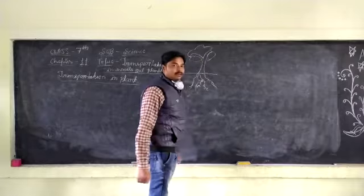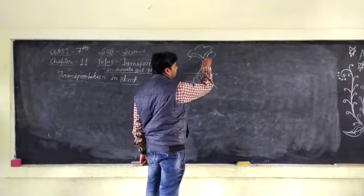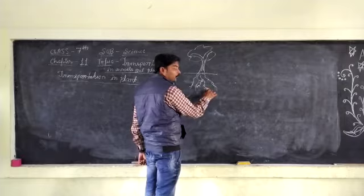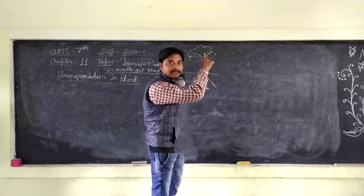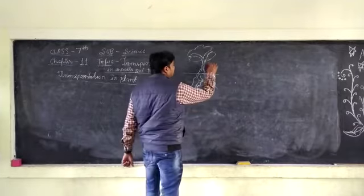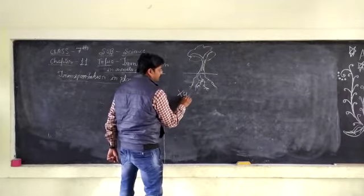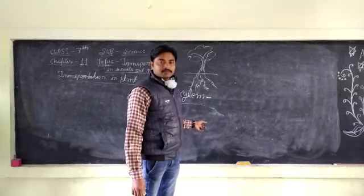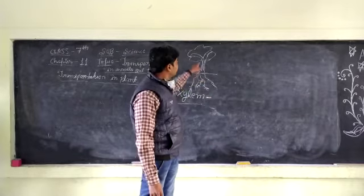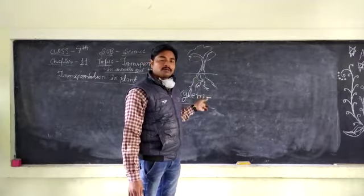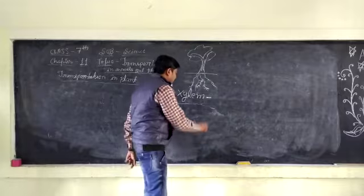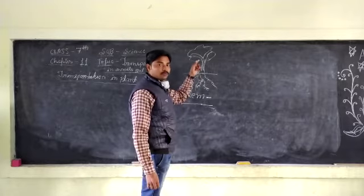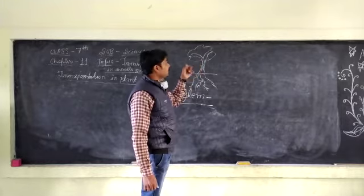So there are two things. There are two kinds of tubes inside the stem. From the tip of the root to the tip of the leaf — that is called xylem. Xylem works from the tip of the root to the tip of the leaf to carry water and minerals. Xylem is a pipe or tube which is present inside the plant.